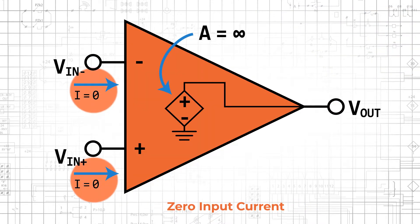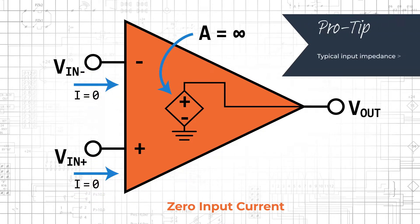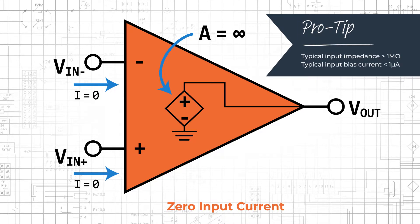Ideal op amps have no current flow into their input terminals, and they have infinite input impedance. The input impedance of real op amps is finite, but usually large enough to ensure negligible amounts of current flow.